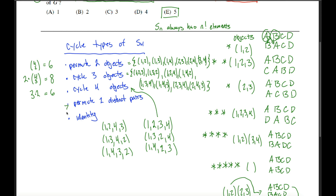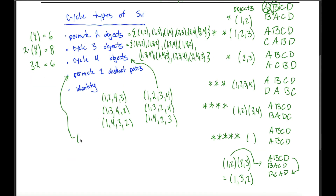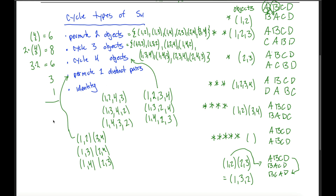For permuting two distinct pairs: object one can go to one of three places, and then the remaining two objects are forced. So there are only three double transpositions. Adding the one identity element, we account for all 24 elements in S4: 6 + 8 + 6 + 3 + 1 = 24.